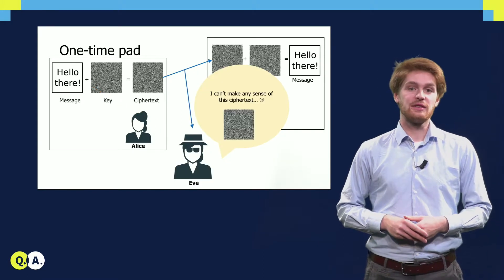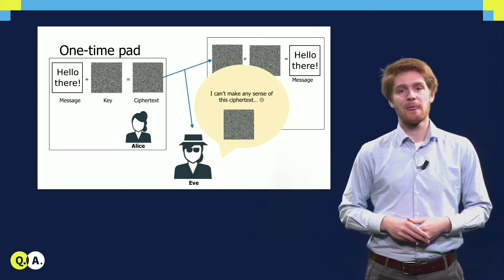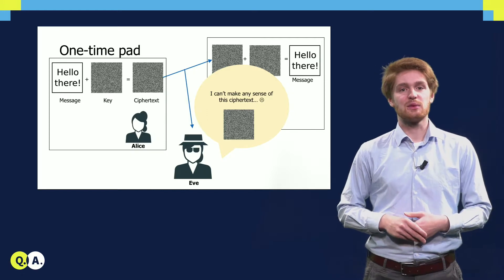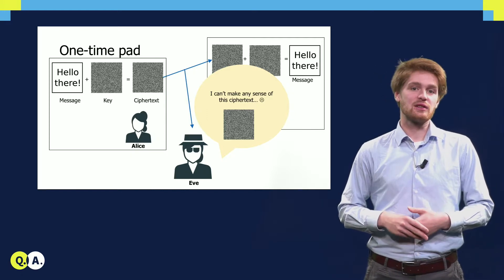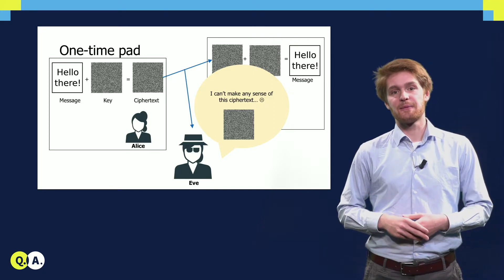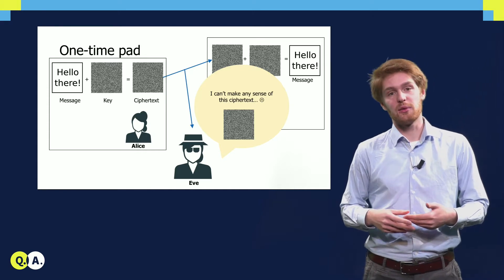Now, the only thing we now need to think about is Eve, who has access to all communication channels between Alice and Bob. In particular, Eve can intercept the ciphertext, but since the key that Alice used was completely random, the ciphertext also looks completely random to Eve, who does not possess the key. Using this one-time key, Alice has thus sent her message securely to Bob.